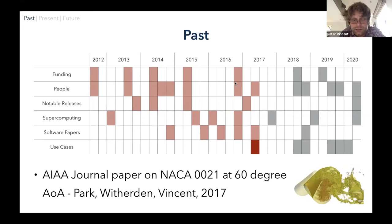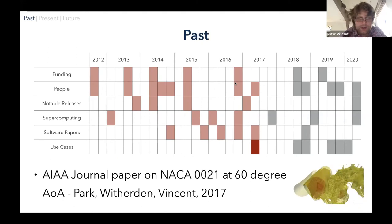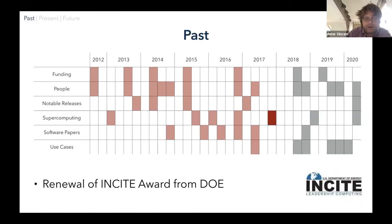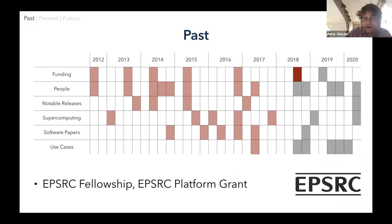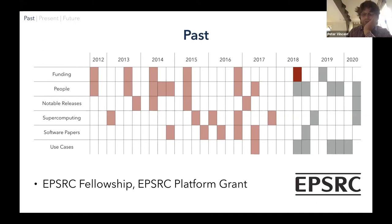Our INCITE award for running turbomachinery simulations was renewed in 2017, and in 2018 the EPSRC fellowship that had underpinned everything from 2013 was also renewed for another three years, which gave further momentum behind the project. By this point Freddie was starting to establish his own research group at Texas A&M. Semi was hired in 2018 working on implicit time stepping technology for PyFR, which he will talk about this afternoon.